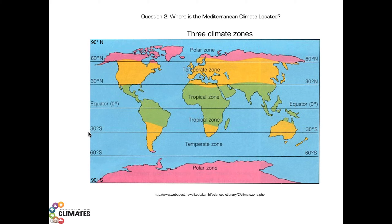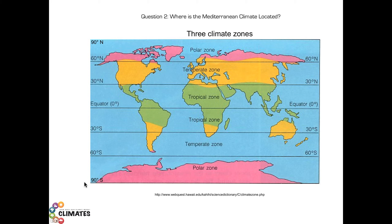A temperate zone is found in both hemispheres between 30 degrees latitude and 60 degrees latitude, north and south. And a polar zone, present in both hemispheres too, is located between 60 degrees latitude and 90 degrees latitude, south and north.